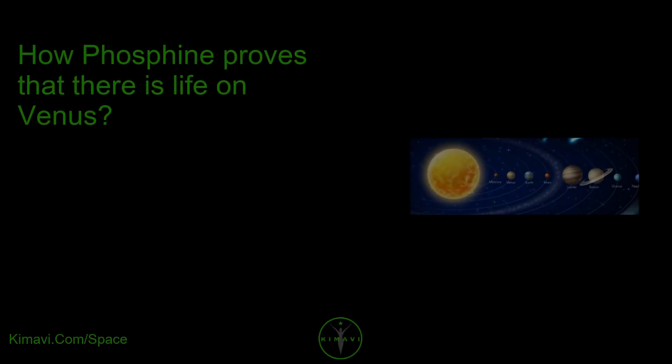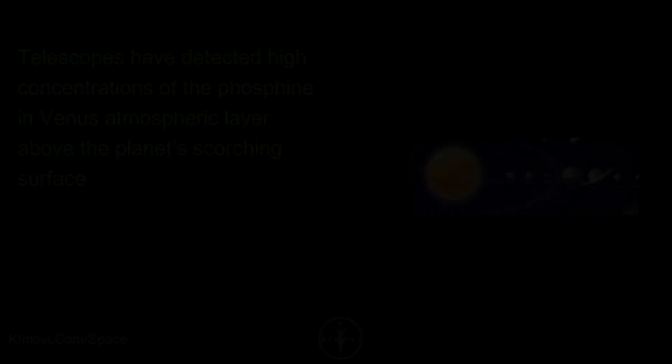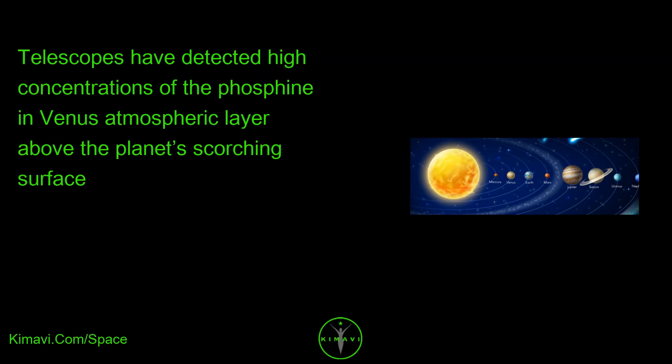How Phosphine Proves That There Is Life On Venus. Telescopes have detected high concentrations of phosphine in Venus' atmospheric layer above the planet's scorching surface.